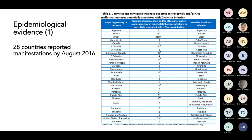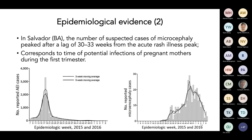What types of evidence have we got so far? We have epidemiological evidence — countries reporting suspected cases that fit the established definition. Over a year later, nearly 30 countries were reporting. Another type of epidemiological evidence: Salvador, a city in Bahia in the northeast region of Brazil. Look at this epidemiological curve — the number of suspected cases of microcephaly peaked after a lag of 30 to 33 weeks from an acute rash illness peak. This corresponds to the time of potential infection of pregnant mothers during the first trimester of pregnancy — this is observational, epidemiological evidence.